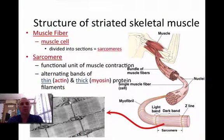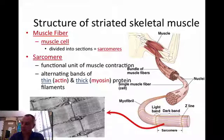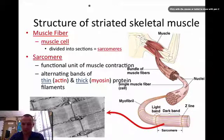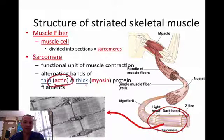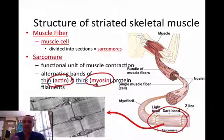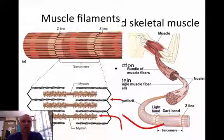The structure of a striated skeletal muscle — we'll talk about the muscle fibers. They're divided into sections called sarcomeres. A sarcomere has alternating bands, and that's what gives it striations. These alternating bands are of actin and myosin, which are two types of protein filaments, and they actually work together in order to make the muscle contract.